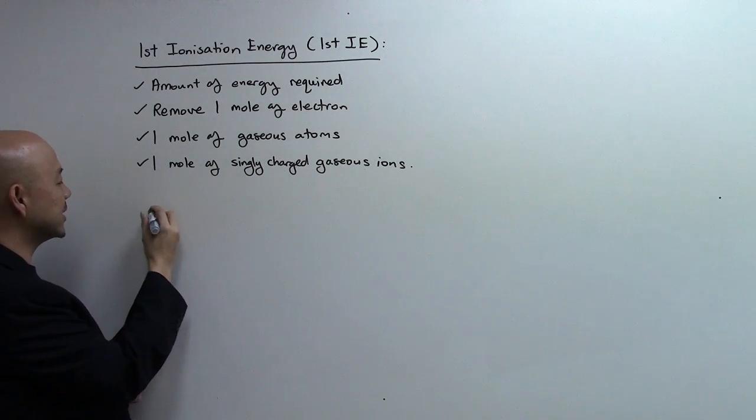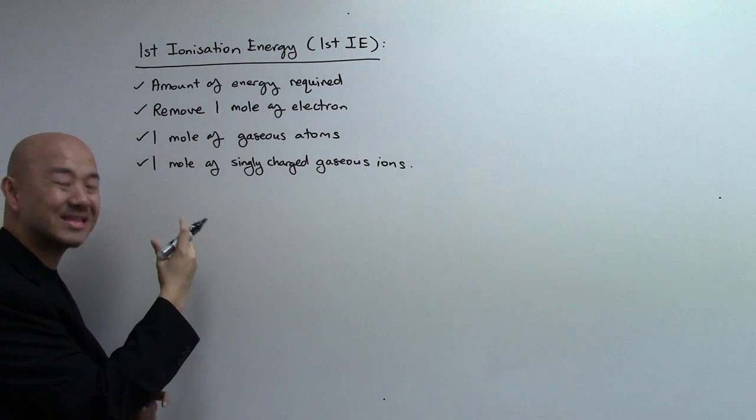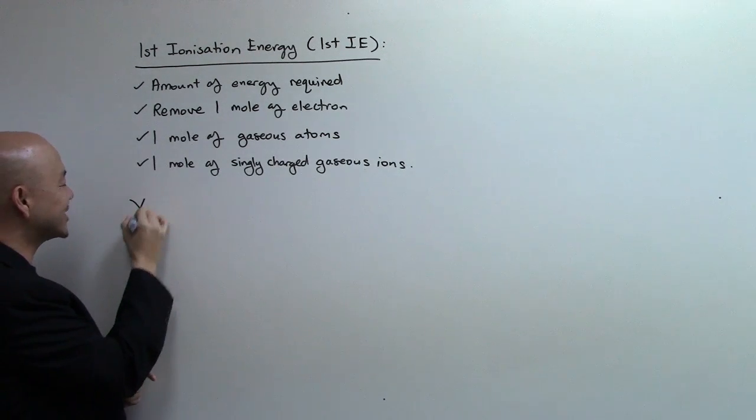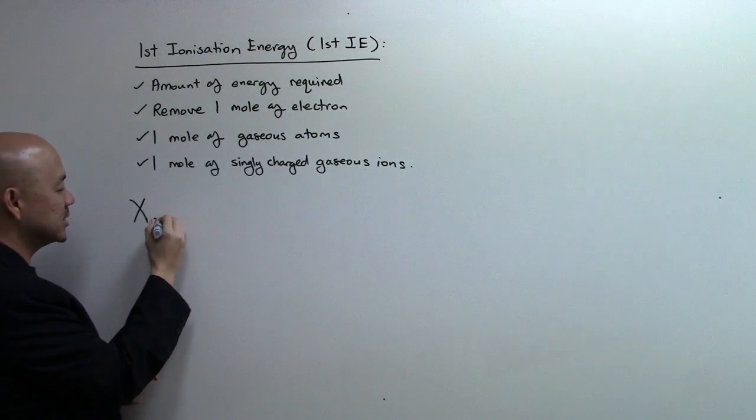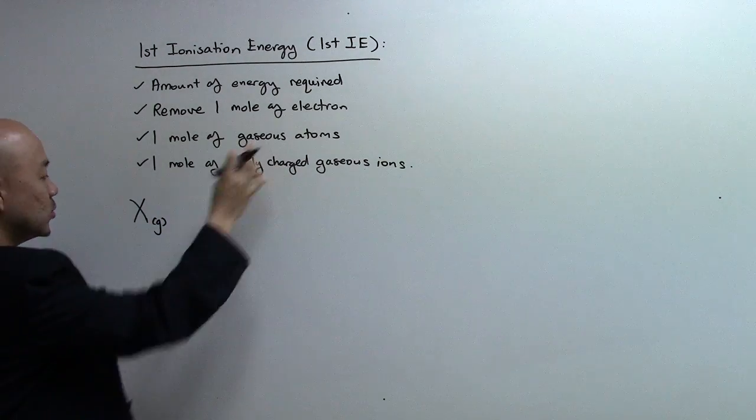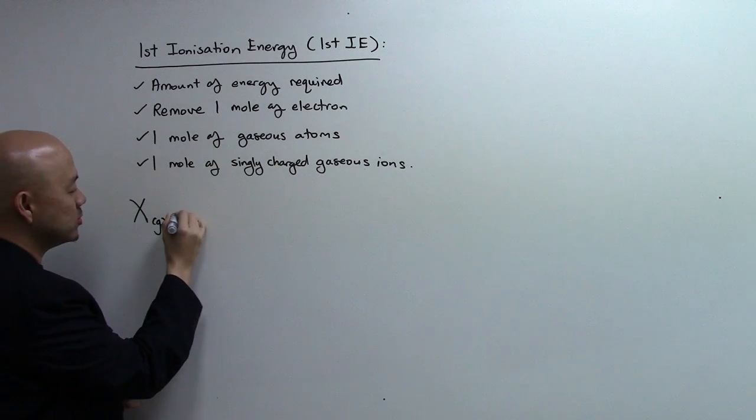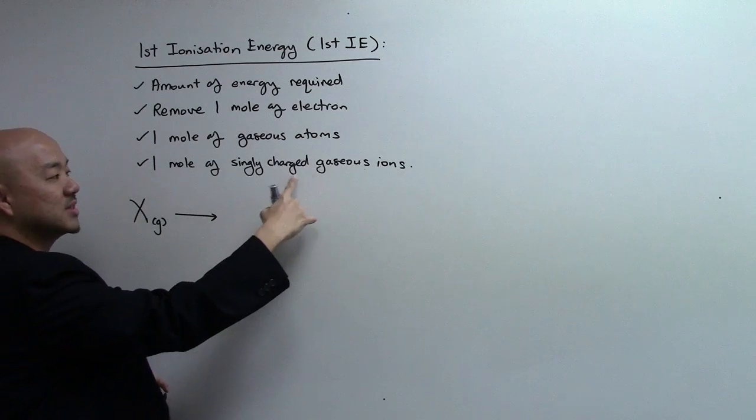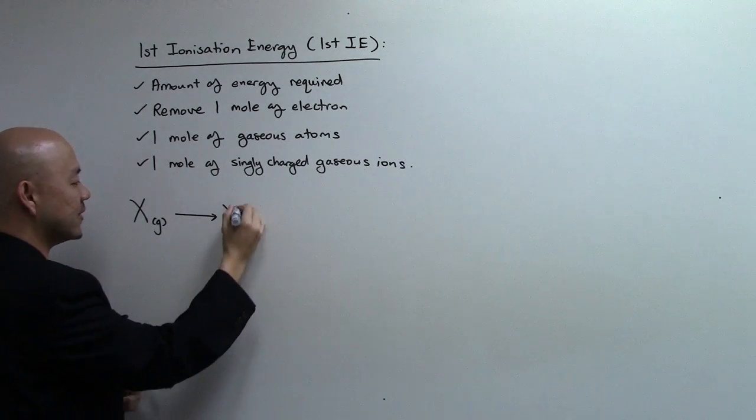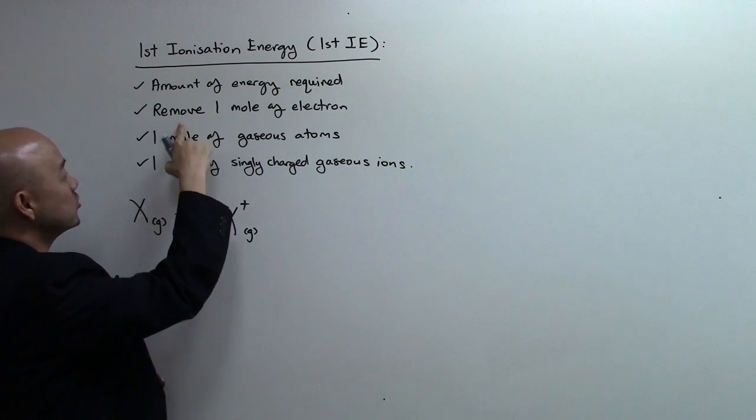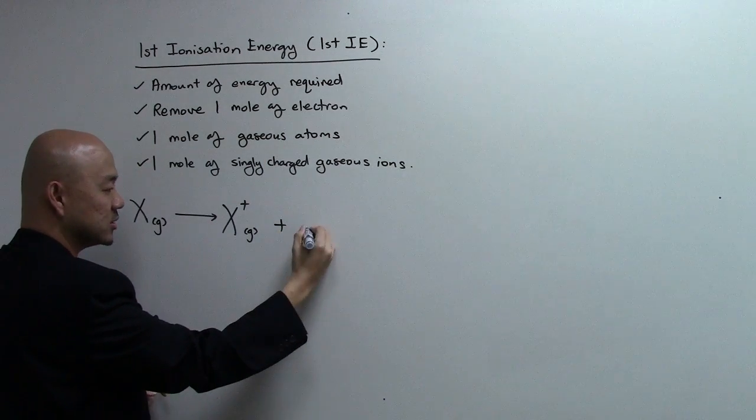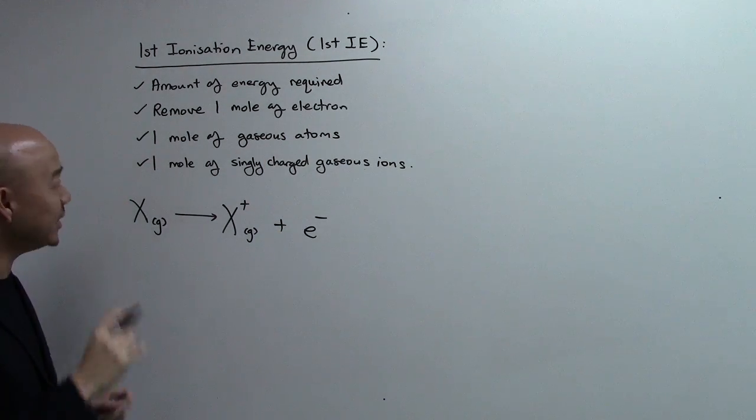To produce one mole of singly charged gaseous ions. So, in general, how do we write an equation out of it? First IE, the equation will look something like this. Let's use an atom as X, an unknown atom. For example, you'll have X gaseous atoms, one mole of it, and then it forms one mole of singly charged gaseous ions. So you're going to have X+ gaseous, and then you remove one mole of electrons.